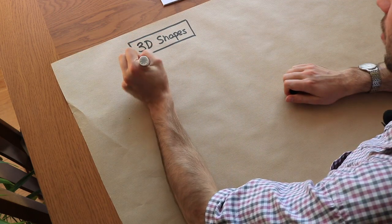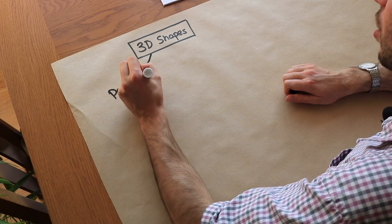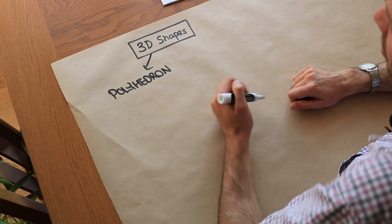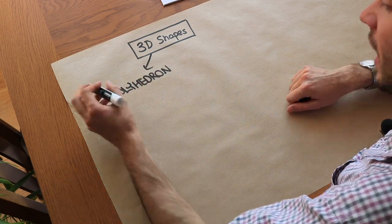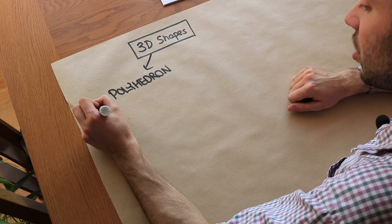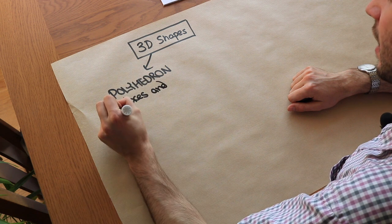Now there are two different types of 3D shapes. We've got polyhedron, which is like the 3D version of a polygon. And just like a polygon meant a 2D shape with straight edges, a polyhedron is a 3D shape with flat faces and straight edges.